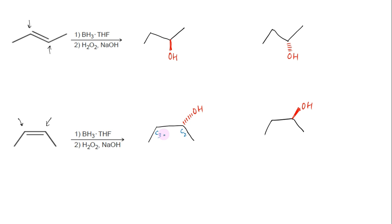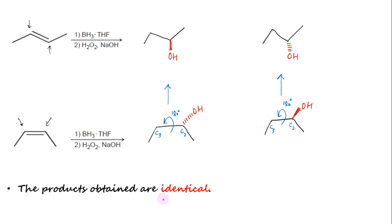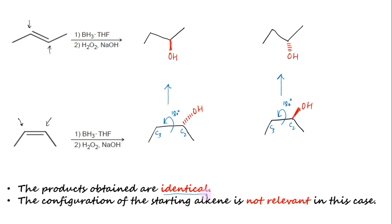Now, if the C2-C3 bond of the product obtained from cis 2-butene is rotated by 180 degrees, it will convert into the product obtained from trans 2-butene. The same can be done in the case of the other two products — rotating the C2-C3 bond by 180 degrees will convert one into the other. Thus, the products obtained from hydroboration-oxidation of cis 2-butene are identical to the products obtained from hydroboration-oxidation of trans 2-butene. Therefore, the configuration of the starting alkene is not relevant in this case.